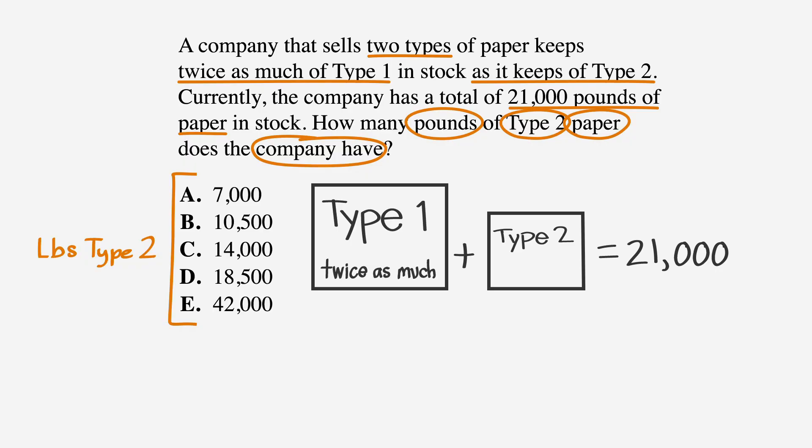Now, let's solve the problem by back-solving. Since we're being asked how much Type 2 paper there is, the answer choices are amounts of Type 2 paper. We want to start back-solving using the middle answer, in this case, choice C, 14,000. Depending on the outcome, we'll know whether we need to plug in a smaller number above it or a greater number below it.